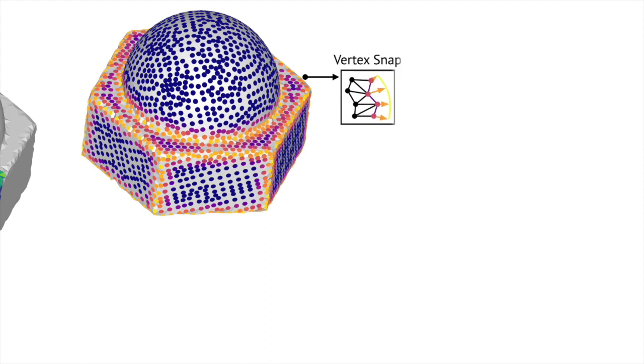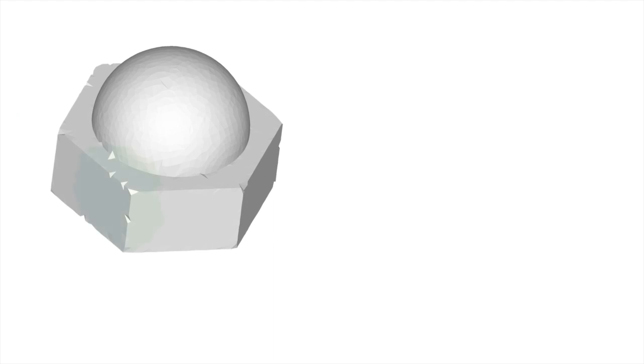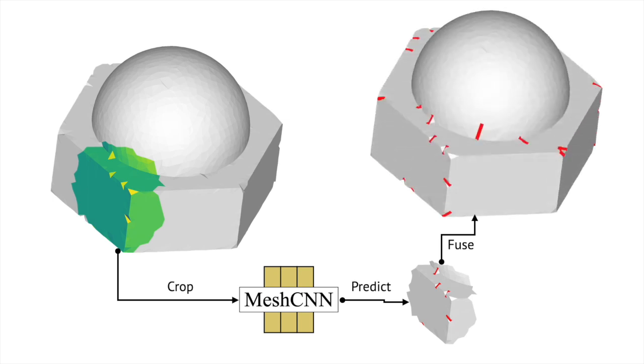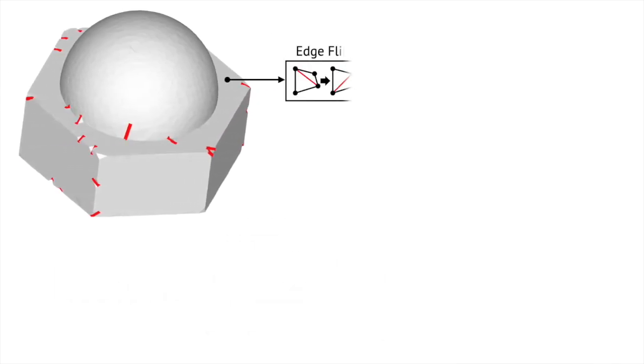We adjust vertex positions to align with predicted features, detect poorly triangulated features locally in a patch then globally in a mesh, and remesh poorly meshed edges by edge flips.